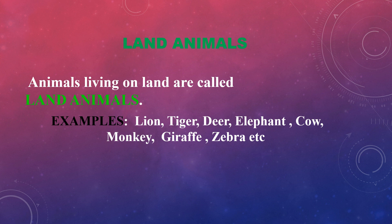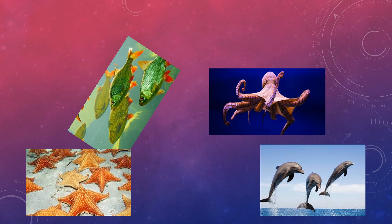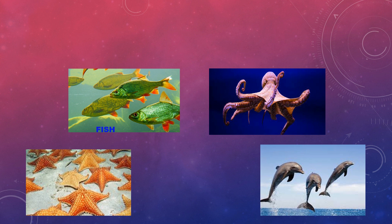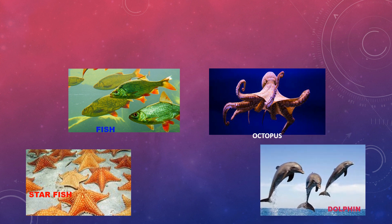What are land animals? Animals living on land are called land animals. Have a look at these animals: fish, octopus, starfish and dolphin. Where do these animals live? You know that these animals live in water. Animals living in water are called water animals. Fish, octopus, starfish and dolphin are water animals.